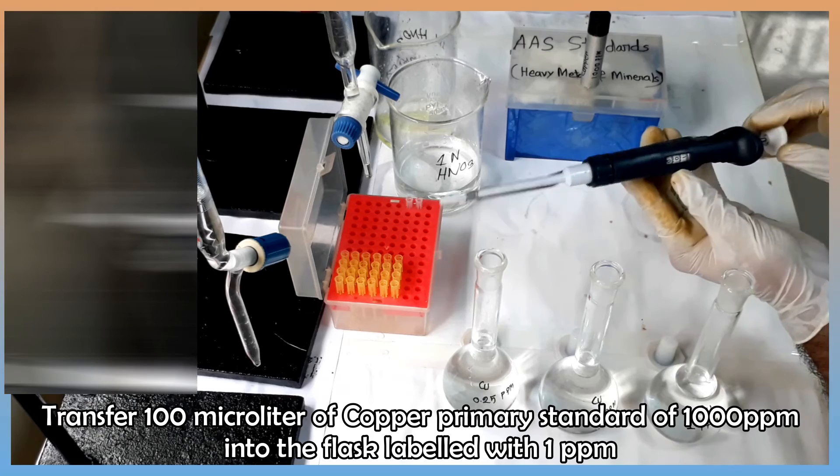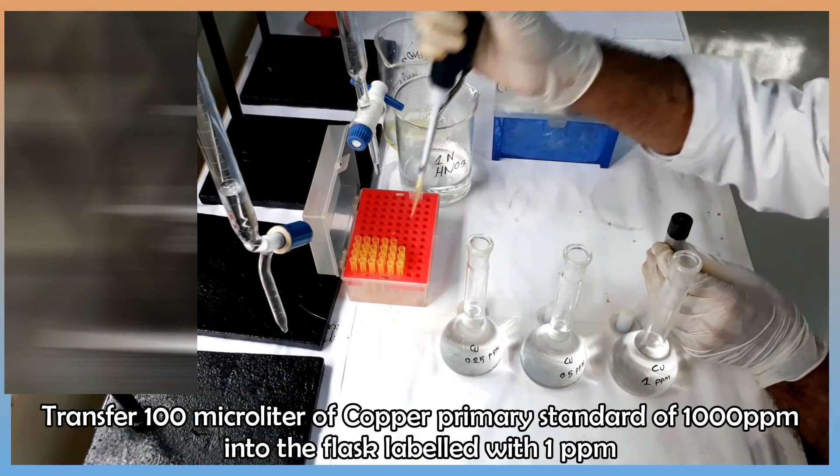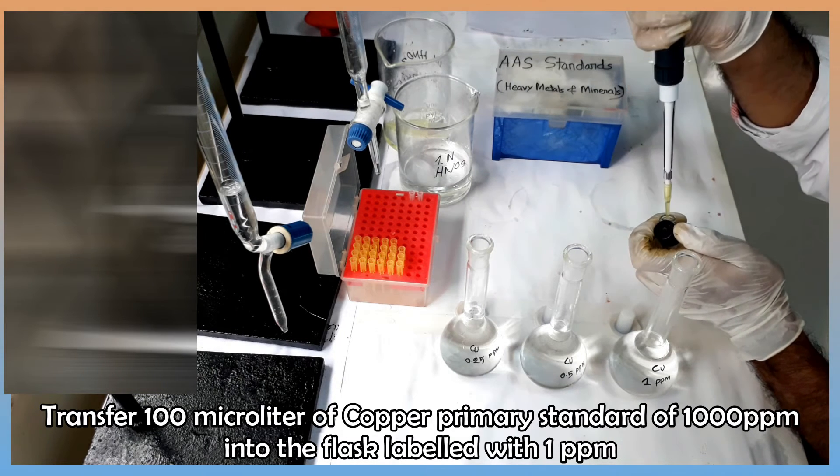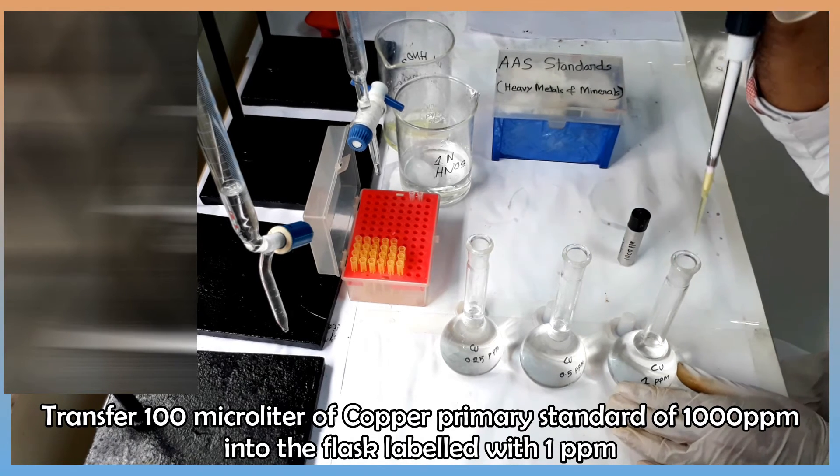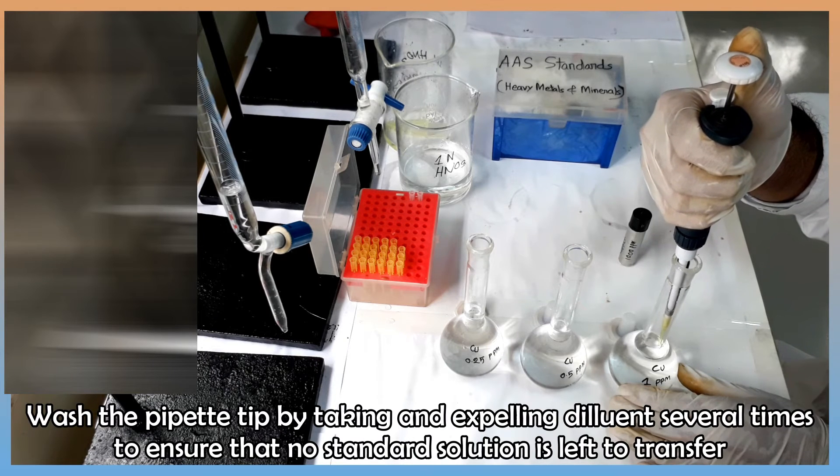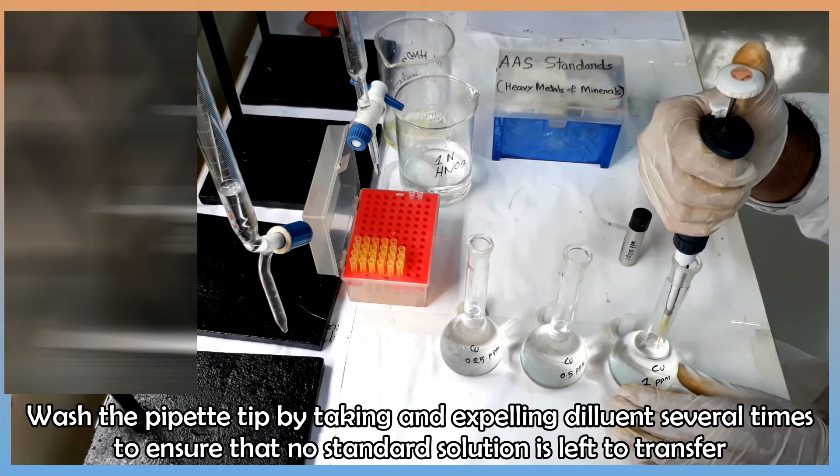Set the micropipette at 100 µL. Attach a new tip and carefully transfer 100 µL of copper primary standard to the flask. Rinse the tip with diluent to ensure that no standard is left on the inner surface of the tip.